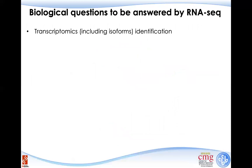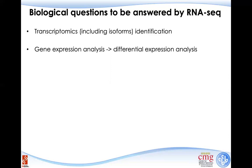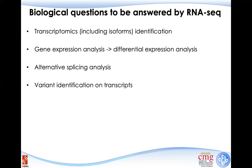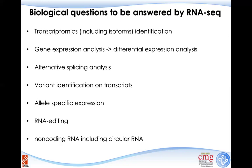RNA sequencing can answer many biological questions, including transcriptome assembly — more relevant for less-studied species — gene expression quantification, alternative splicing, and variant identification, as explained earlier. There are also higher-level analyses including allele-specific expression, RNA editing, and non-coding RNA analysis including circular RNAs. Note that mRNA sequencing is not suitable for circular RNA analysis, as those RNAs are not polyadenylated.